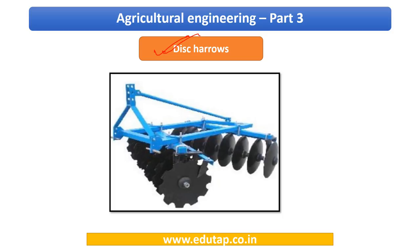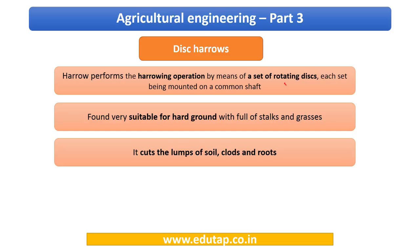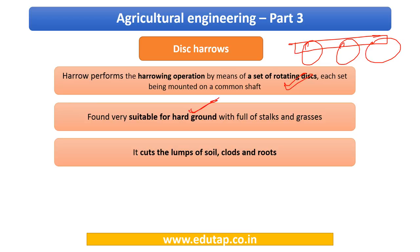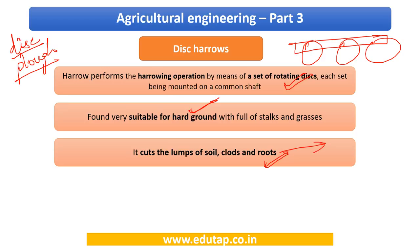Next is the disc harrow. As the name suggests, the penetrating part is in the form of a disc — similar to the disc plow we saw earlier. It has a set of rotating discs on a common shaft. Disc harrows are suitable for hard ground — the same point we noted for disc plows. Its basic function is cutting the lumps of soil, clods, and roots.